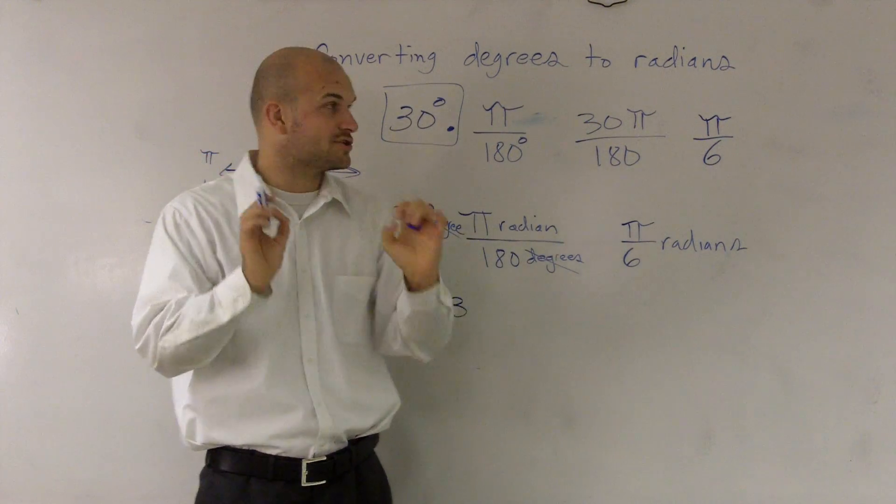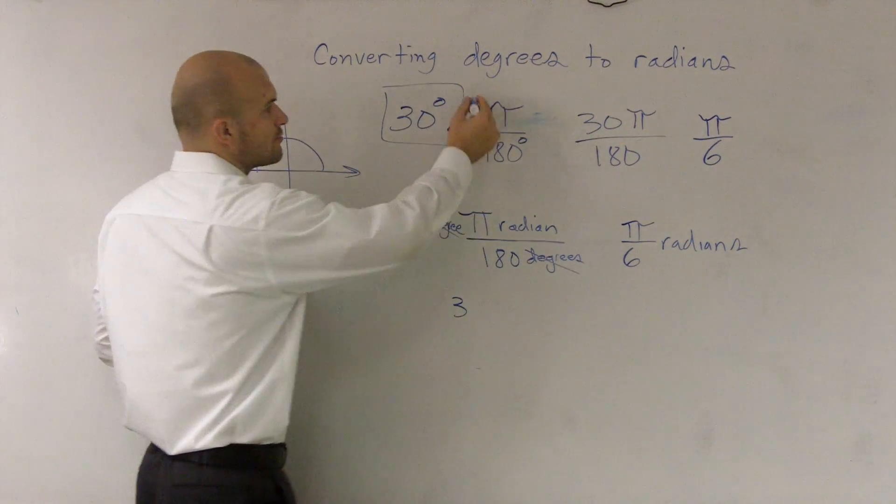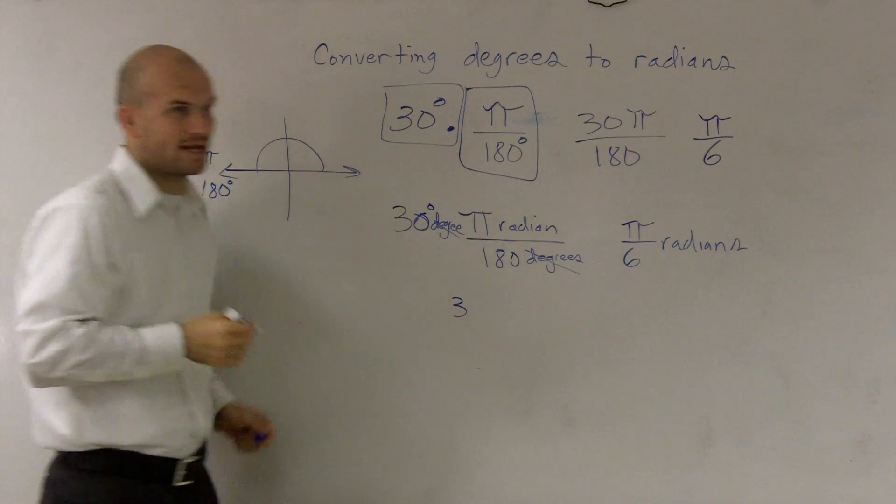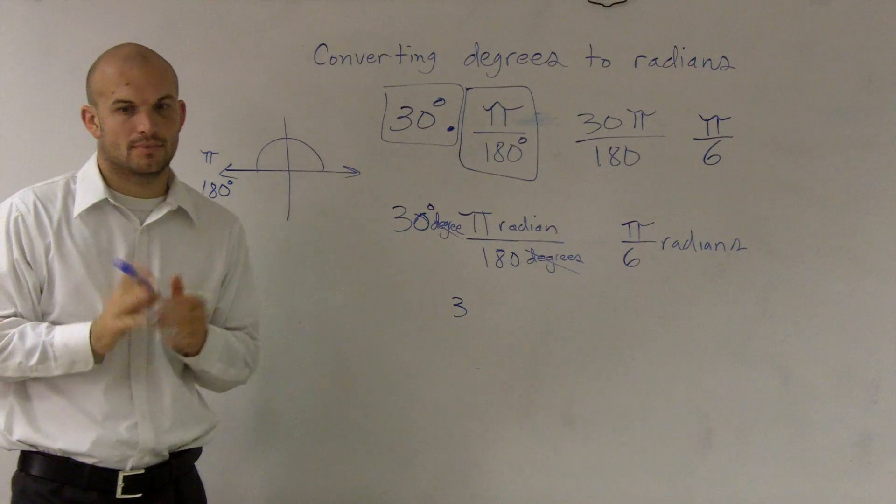So whenever you're converting degrees to radians, use the ratio of pi over 180. Okay? That's the ratio you want to use.